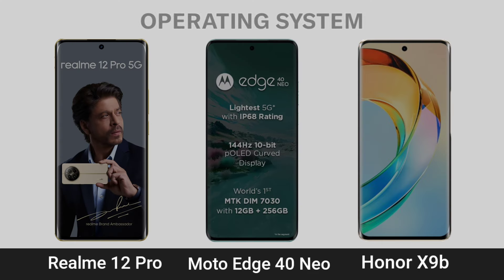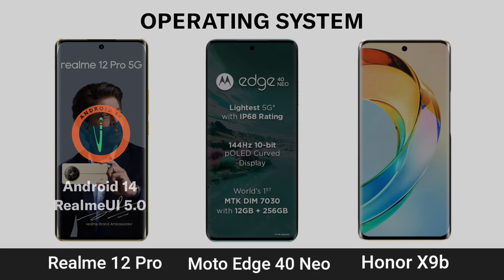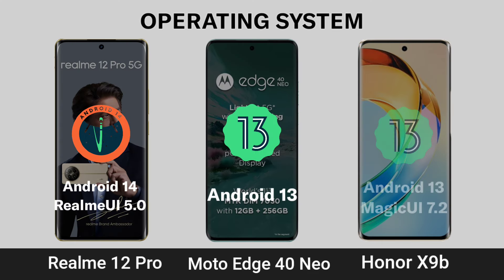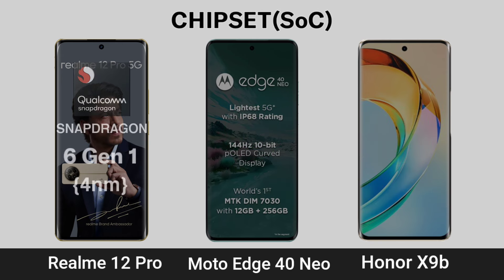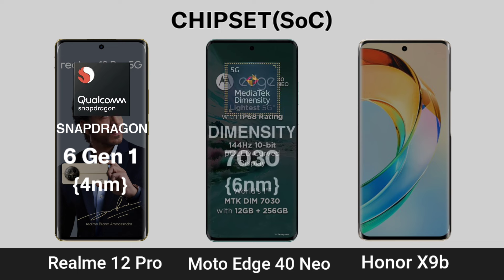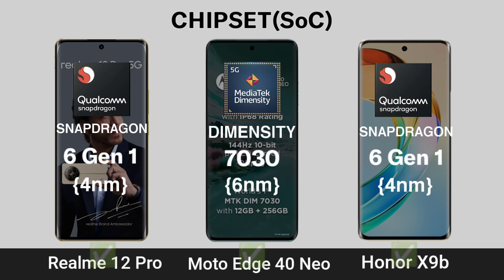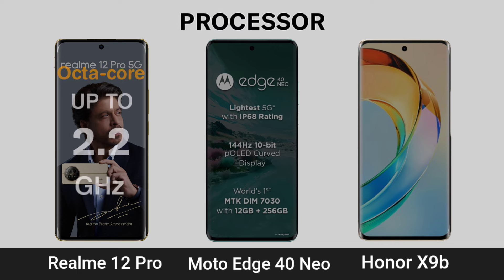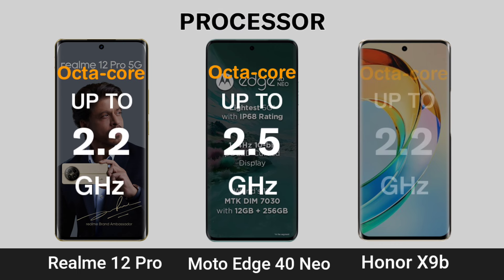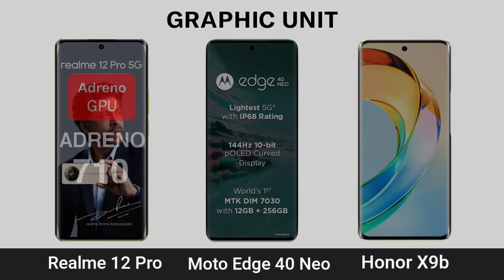Operating System. Chipset. Processor. Graphic Unit — detailing the software and performance hardware specifications for the Realme 12 Pro, Moto H40 Neo, and Honor X9B.